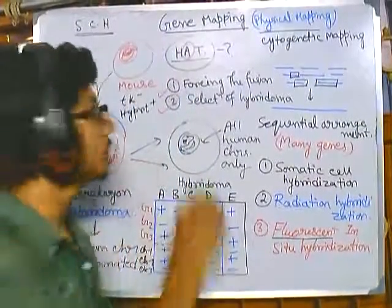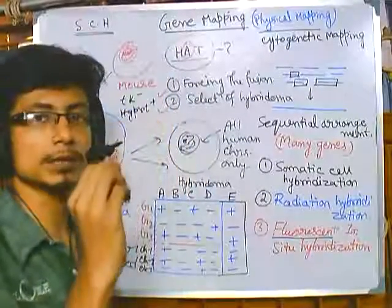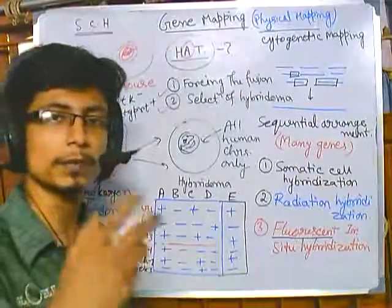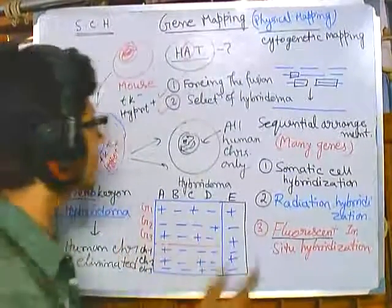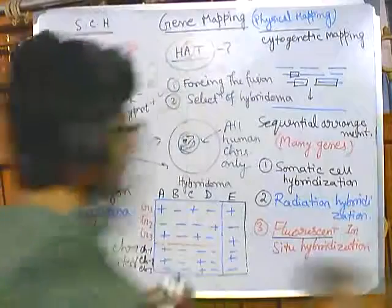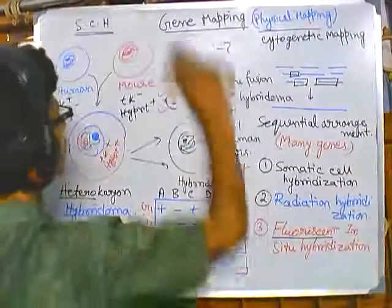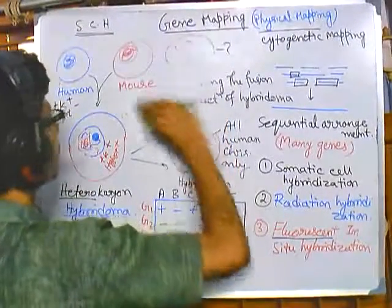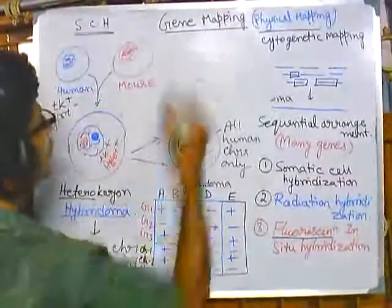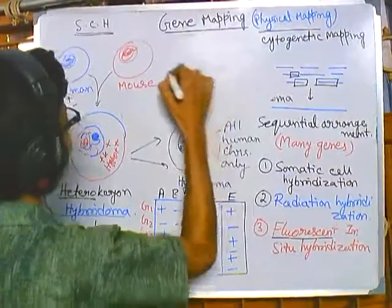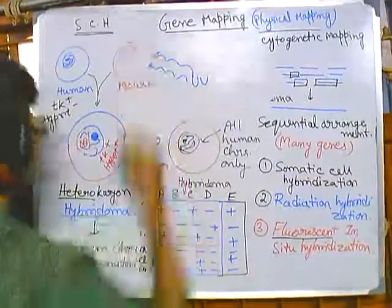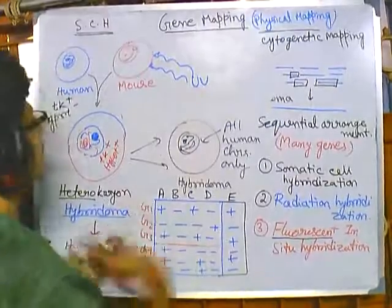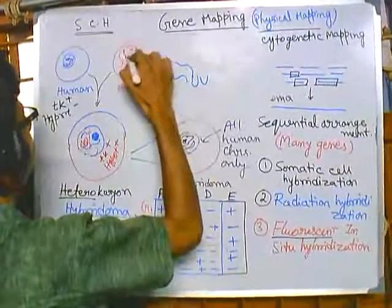This is important: we are irradiating the mouse cells with UV irradiation before hybridization. The rest of the process — selection procedure and everything — remains the same. The difference is here: UV irradiation will degrade the chromosomes present in the mouse cells. They will be degraded.